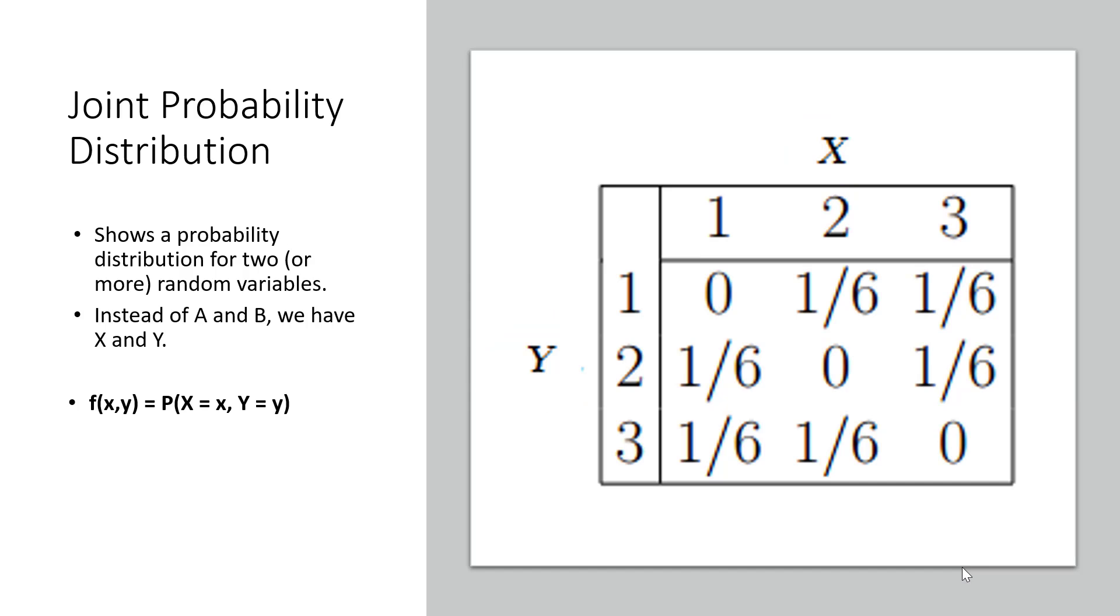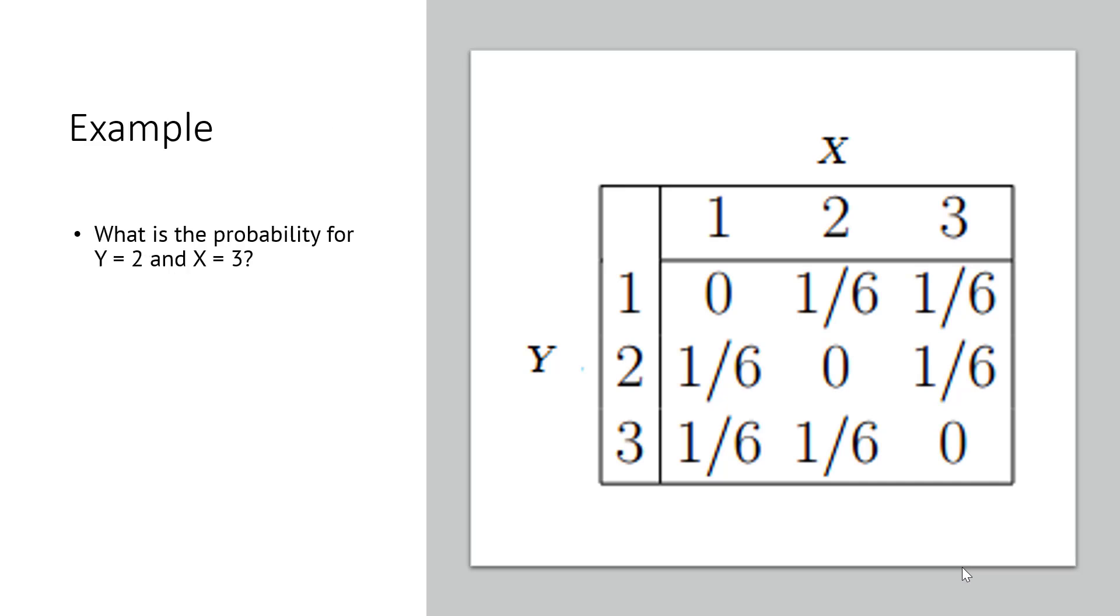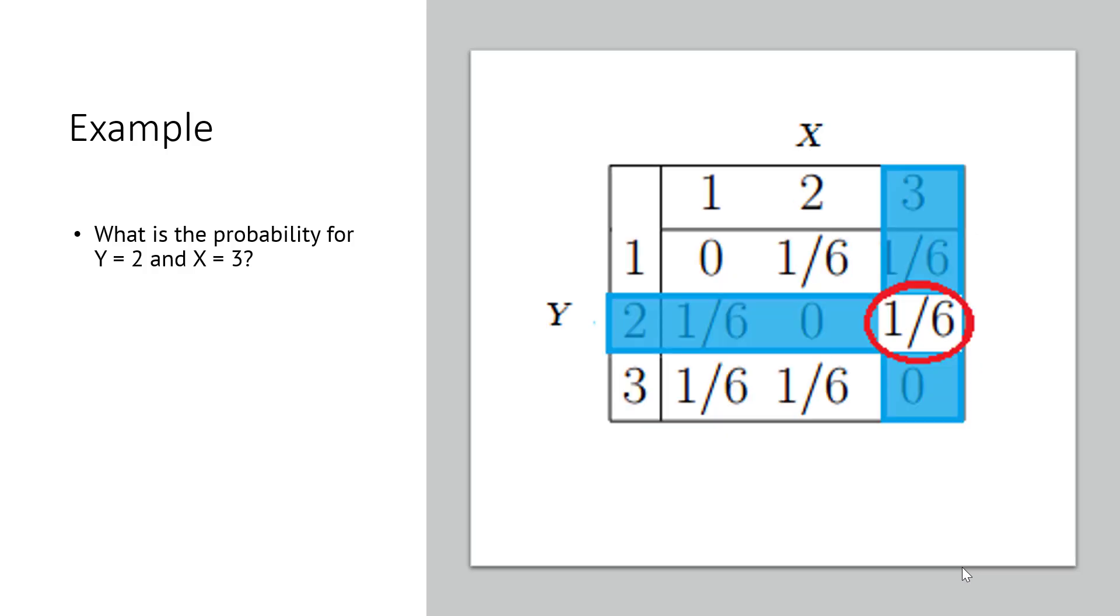For example, this table shows some probabilities for X and Y happening at the same time. You can use the table to find joint probabilities. For example, what is the probability for Y equals 2 and X equals 3? To answer that, we look at the table for the intersection of Y equals 2 and X equals 3. The answer, 1/6, is circled here in red.